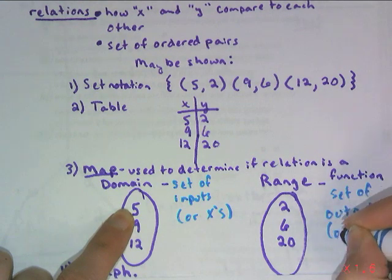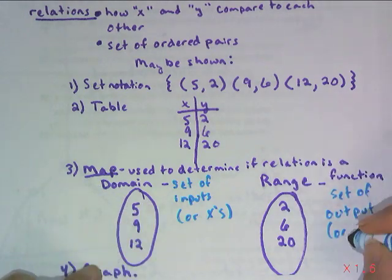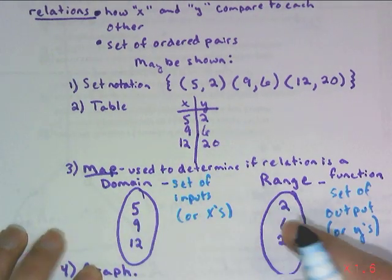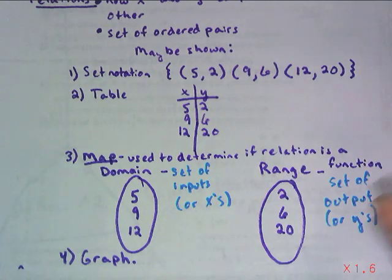And the way you think about it is d comes before r, so inputs come before outputs. So the map is here, domain, range. Also you can graph them and of course you can come up with an equation to see how these two are related.